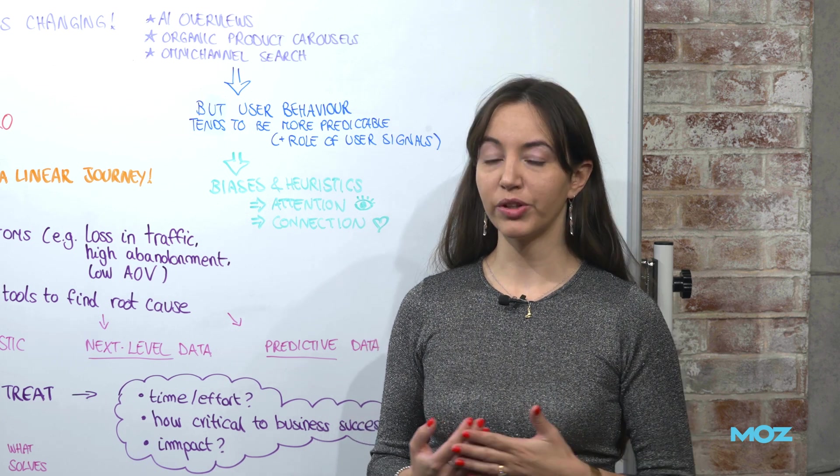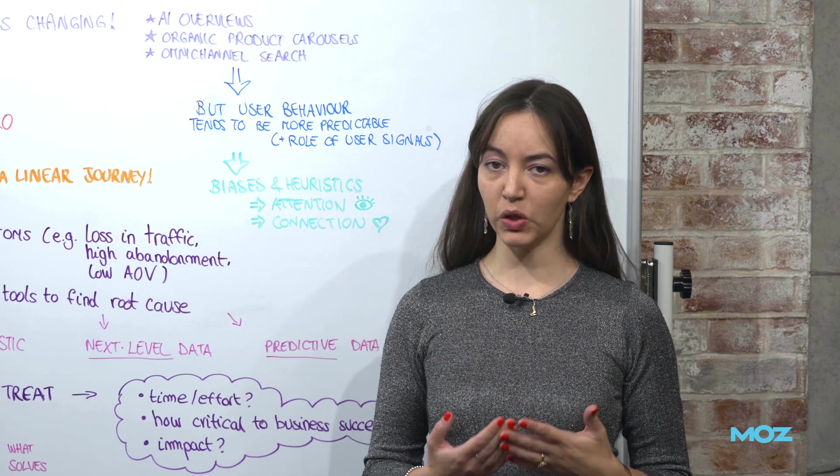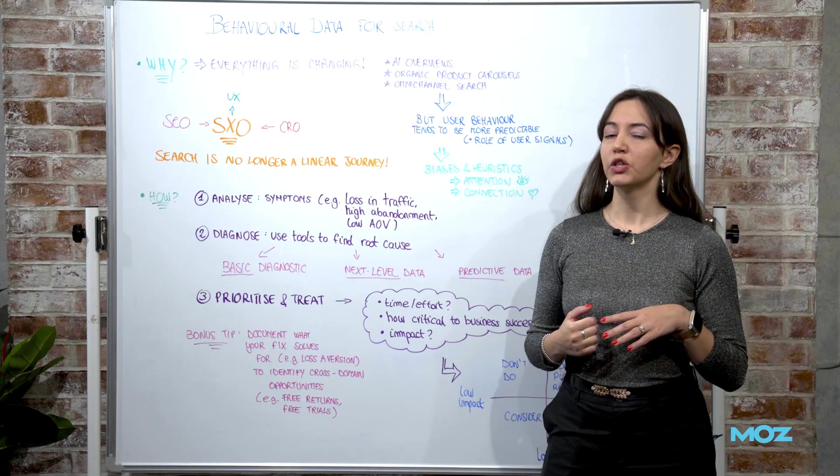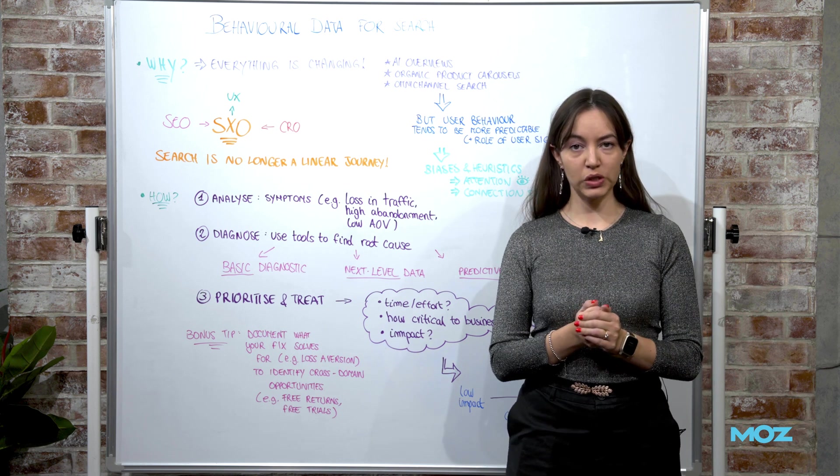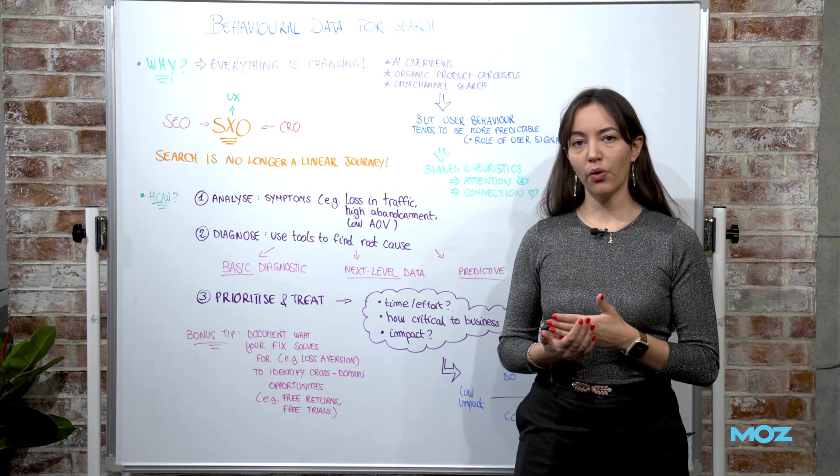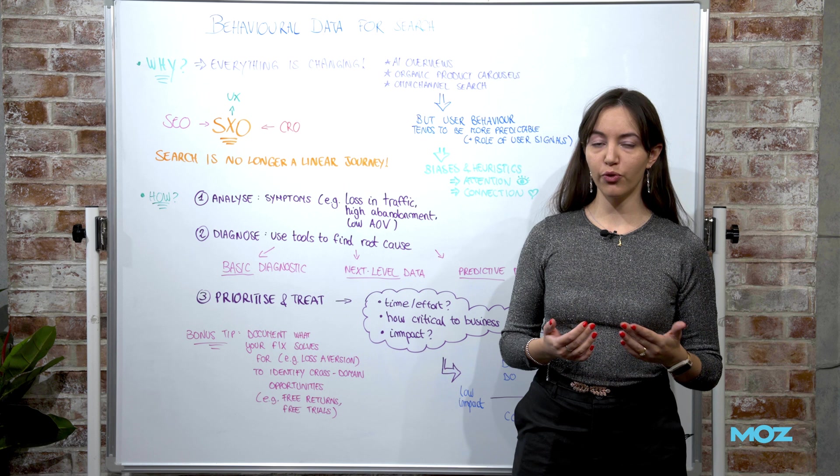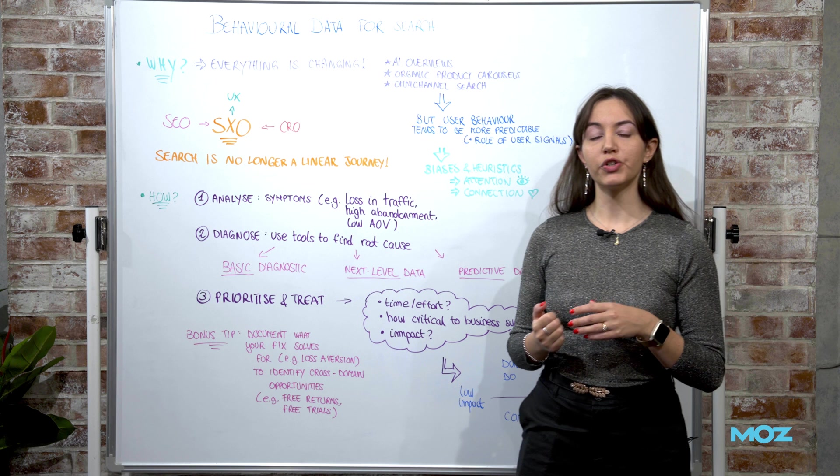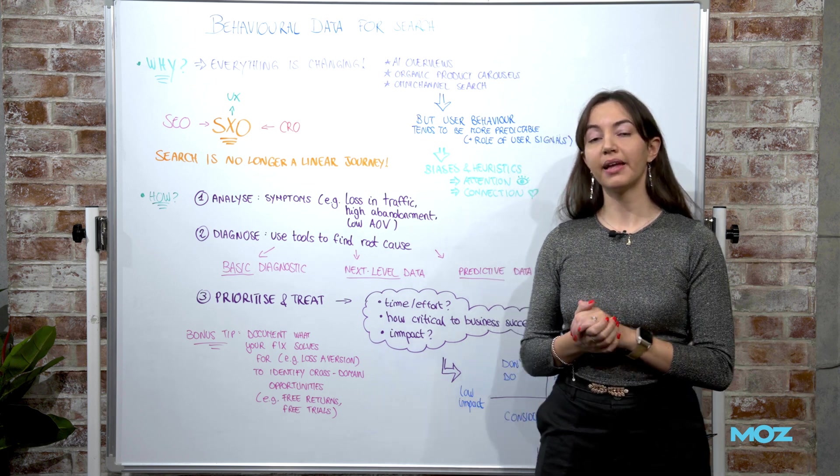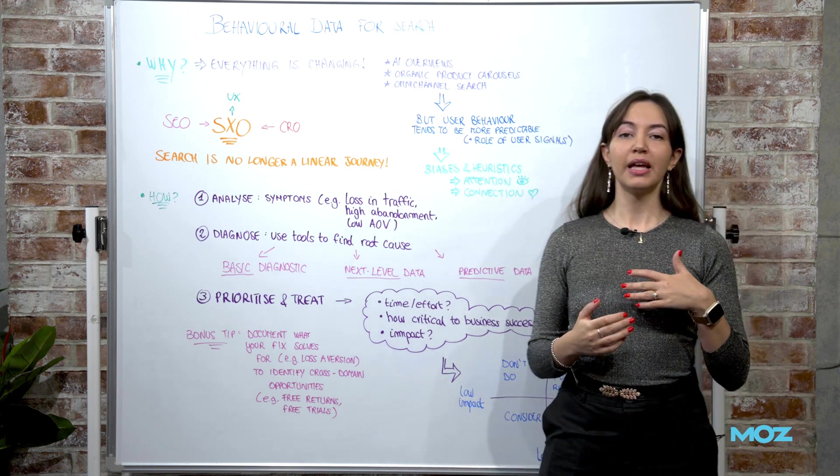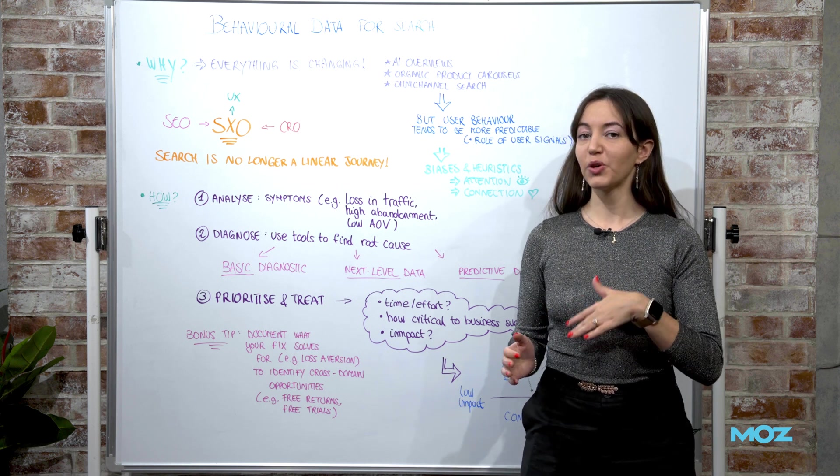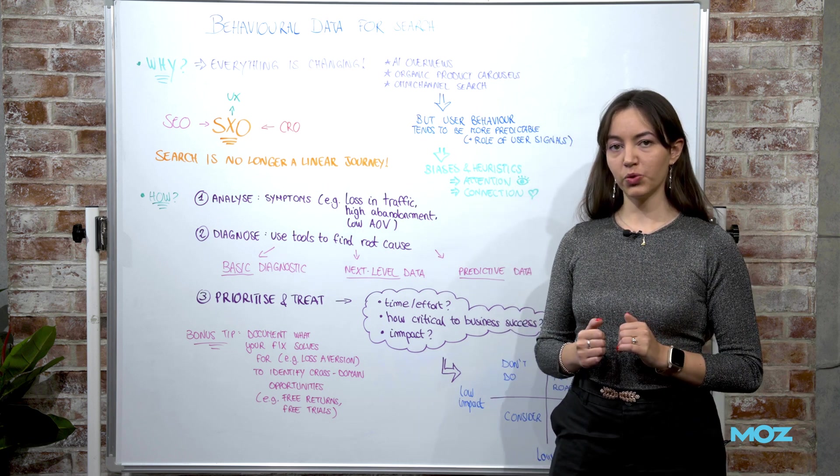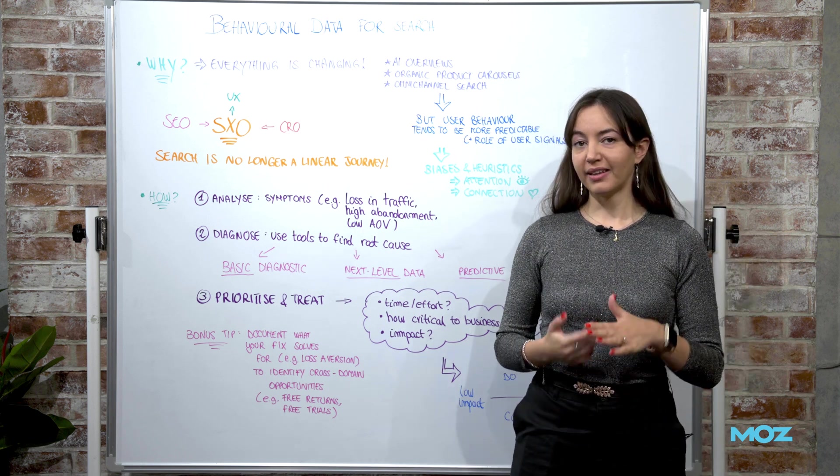And the second step is analyzing what the root cause might be. And we have several diagnostic tools at our disposal which can give us three different levels of data to analyze. So the first level is the basic diagnostics. This is the kind of data that we don't need a tracking setup for nor specific buy-in. And then there is the next level data which is where you normally need some tracking setup. And then the predictive data which is the harder one to get because it relies on specific training or maybe specific equipment. So we're gonna see each one of them to see how we can carry on with our analysis.